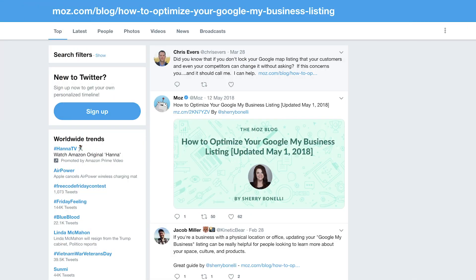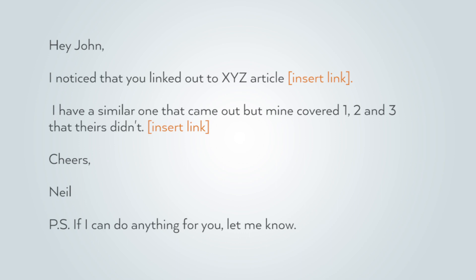When you do that, more people are going to want to share it. The next thing I want you to do is go to search.twitter.com, type in your competitor's URL, and it'll show you all of the people who shared your competitor's article. Reach out to them with a message like: 'Hey John, I noticed you linked up X, Y, and Z article. I have a similar one that just came out, but mine covered one, two, and three that theirs didn't. Cheers, Neil. P.S. If I can do anything for you, let me know.' That one simple thing will help you get more traffic. The more traffic you get, the higher chance you're going to have of people sharing your content and linking to it. Because the more backlinks you get, the more shares you get — this all helps with user metrics and overall rankings over time.